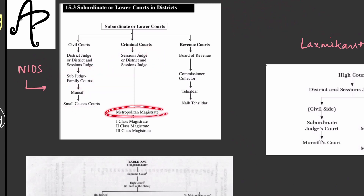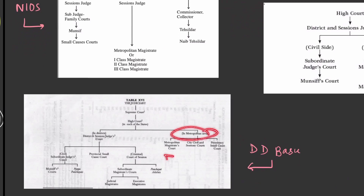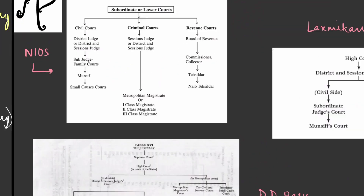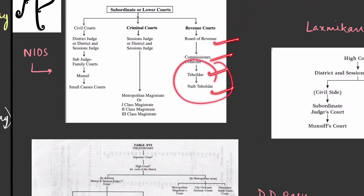In the Metropolitan Magistrate you will see courts for Metropolitan Areas — this is different. For Revenue — for land matters — you have the Board of Revenue, then Commissioner or Collector, then Tehsildar, Nayib Tehsildar. All these terms you will hear.